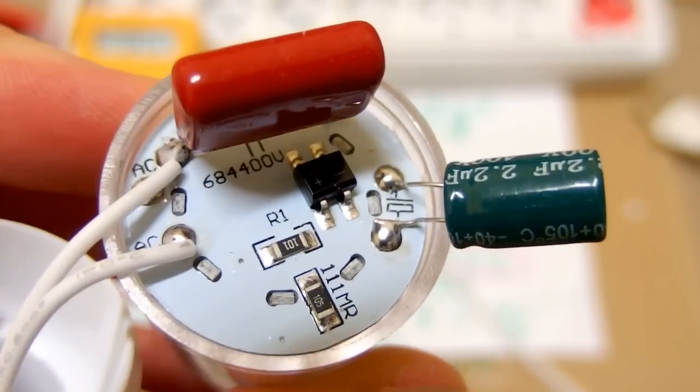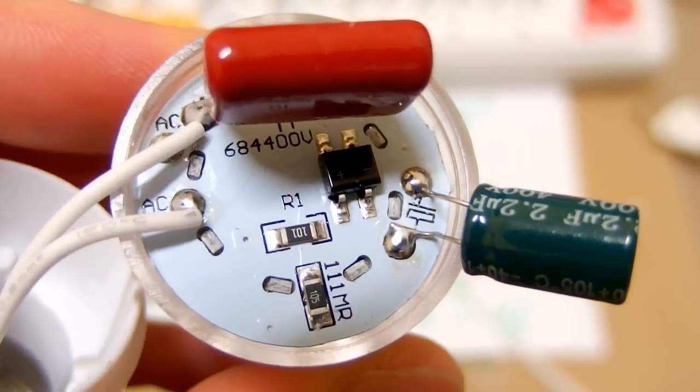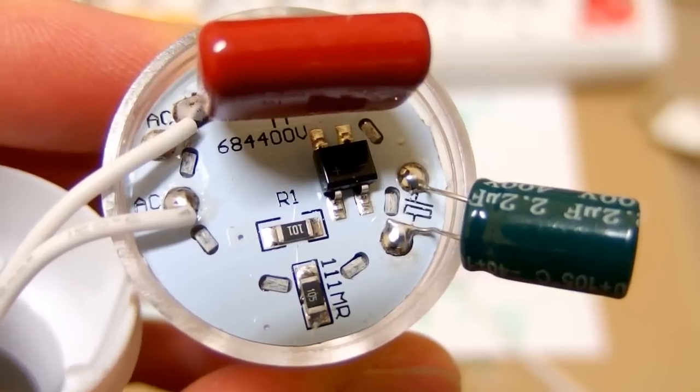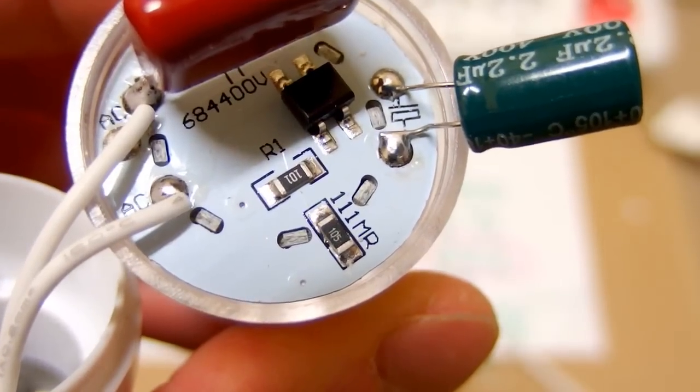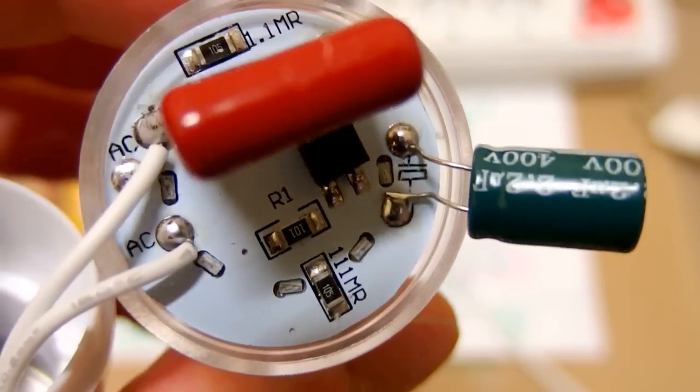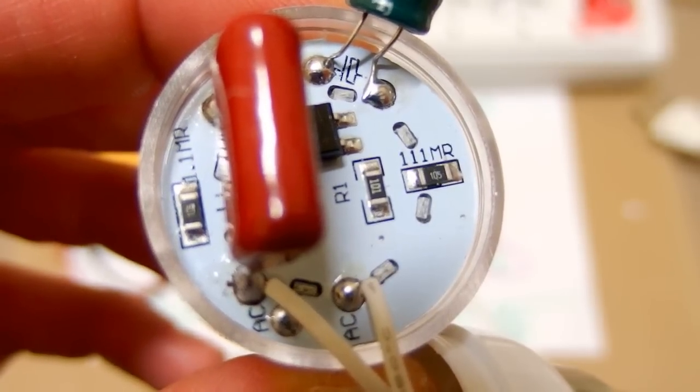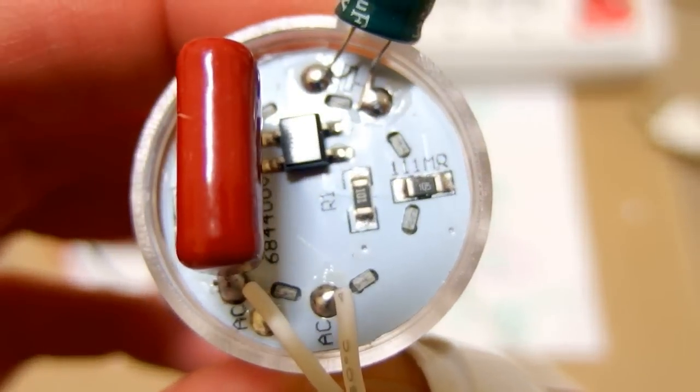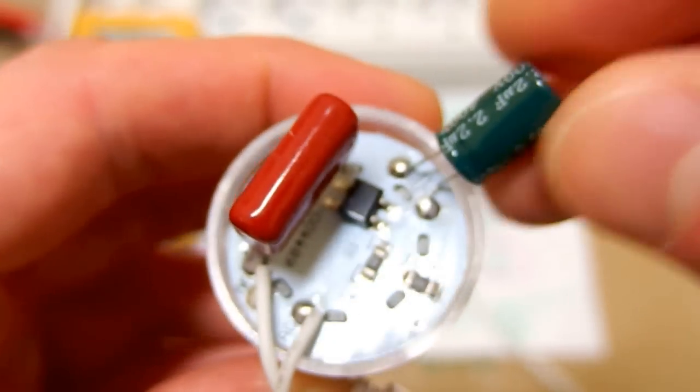There is also a bridge rectifier and 3 resistors. One of them is 101, this is 100 ohms and the other two resistors are 105, this is 1 megaohm. The 100 ohm resistor probably is the inrush limiting resistor and those two 1 megaohm resistors are probably for discharging of those two capacitors.